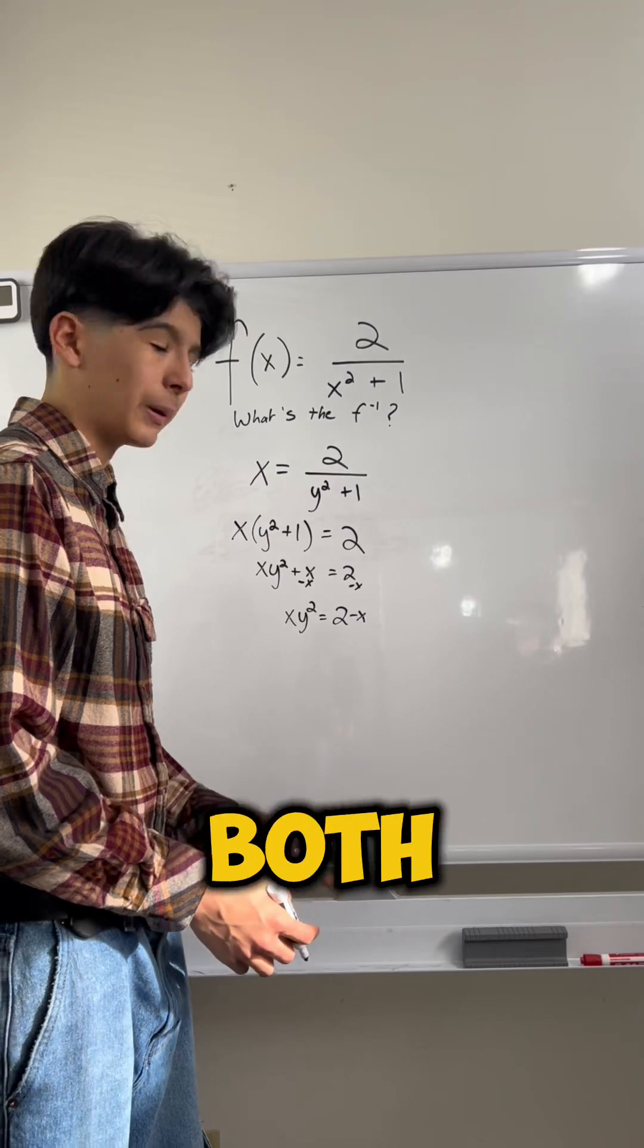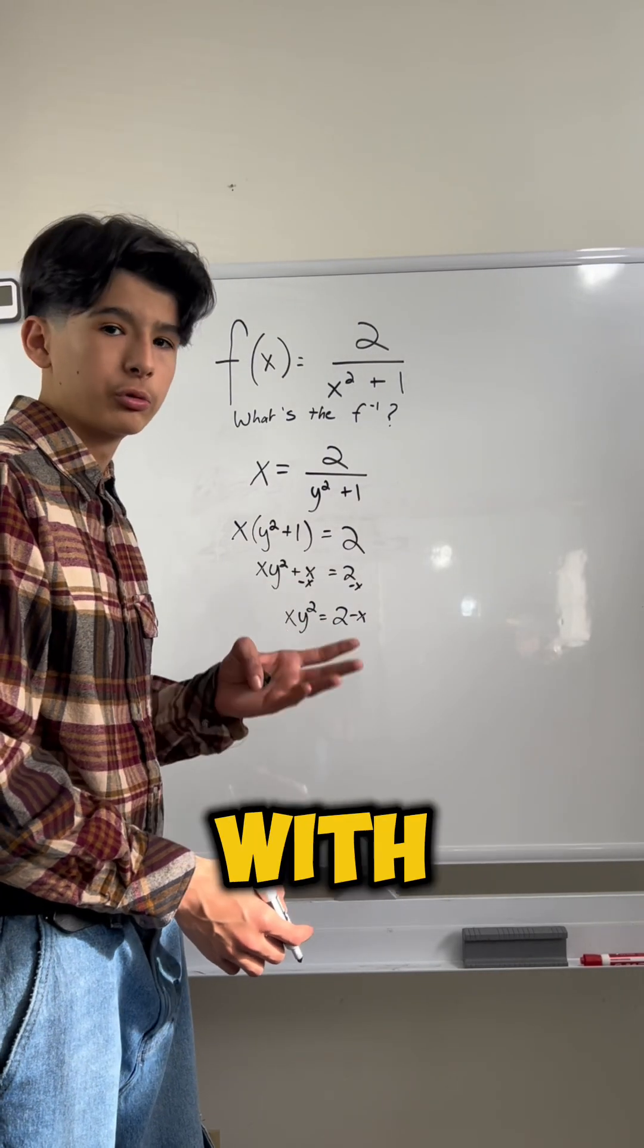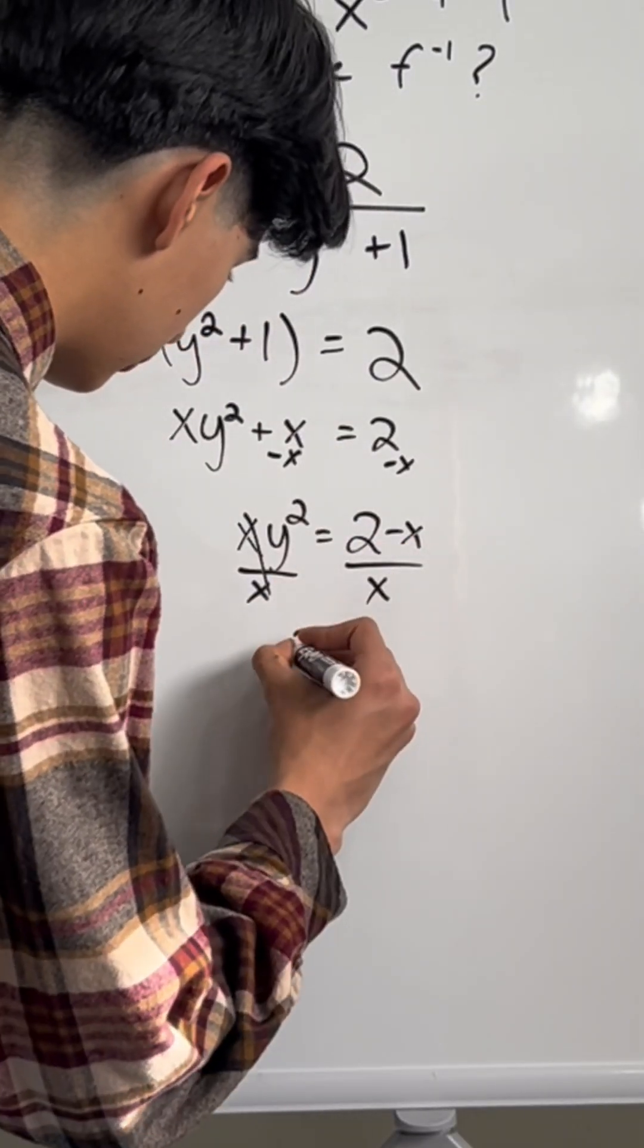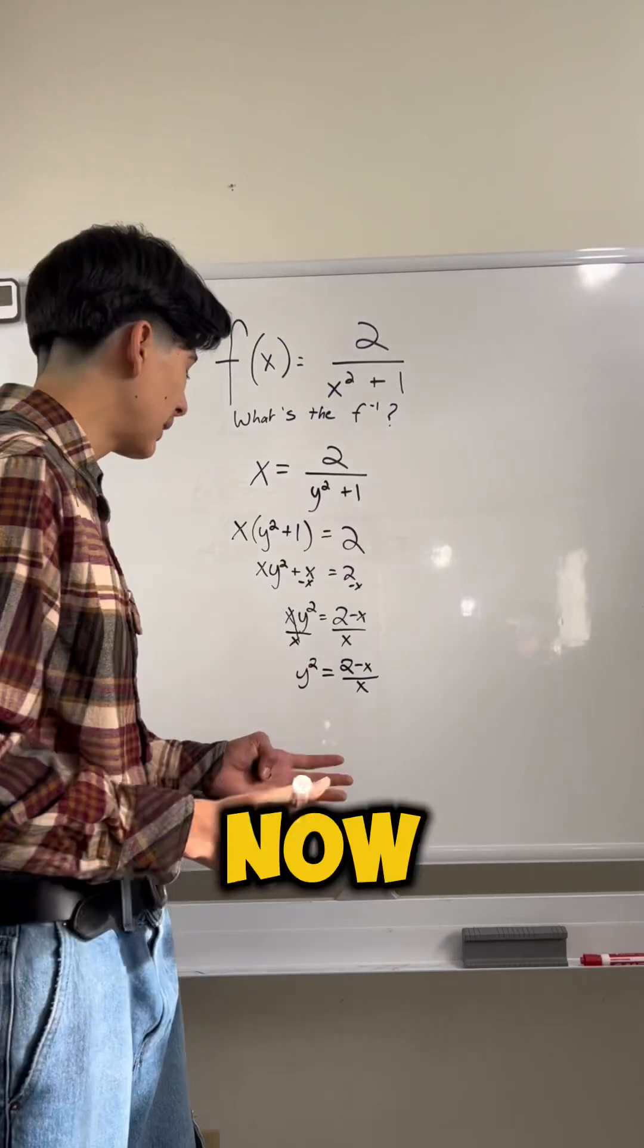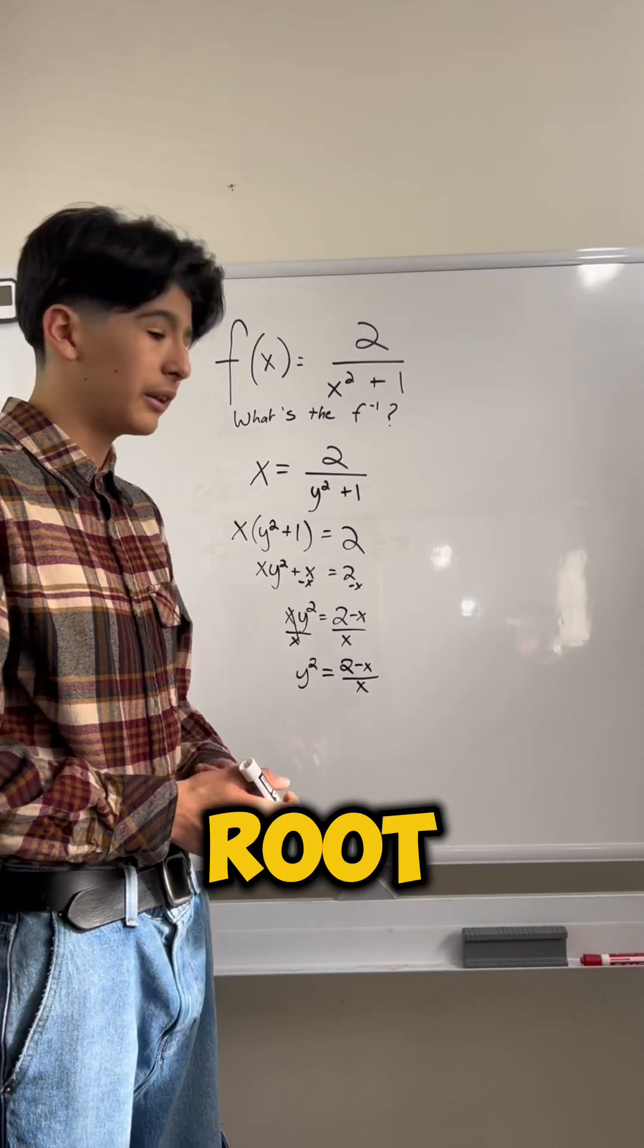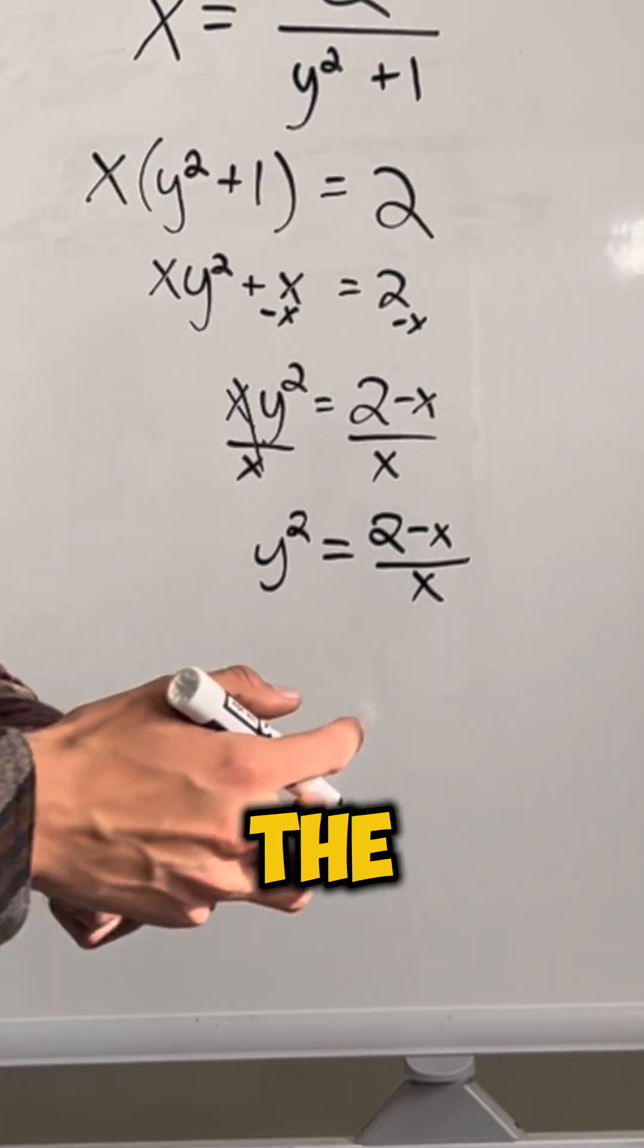Then, I'm going to divide both sides by x to get rid of this x that's with the y squared. Now, all we have to do now is take the square root of both sides to get rid of this square that's on the y.